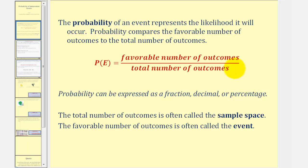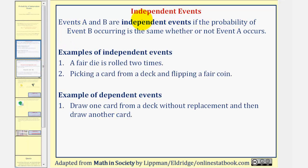In this lesson we're concerned about independent events, where events A and B are independent if the probability of event B occurring is the same whether or not event A occurs. For example, a fair die is rolled two times. The outcome of the second roll is not affected by the outcome of the first roll, so the probability of rolling a particular number the second time is the same whether or not the first roll occurs.